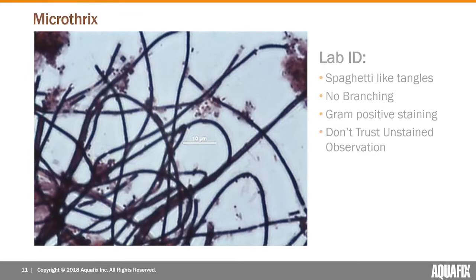The other major foam causer is Microthrix. Again, it's Gram stain positive — that purple color really pops. It doesn't have any branching like Nocardia. We tend to describe it as a tangled mat of spaghetti. Our microbiologists note: if you're doing microscopic observations without the staining technique or equipment, don't trust an observation of Microthrix without the stain. There are other filaments that can look very similar to Microthrix but have totally different causes and different ways to resolve.